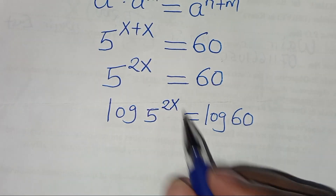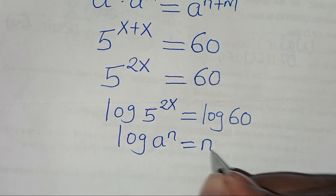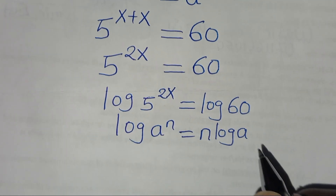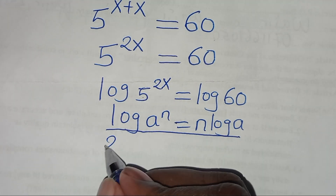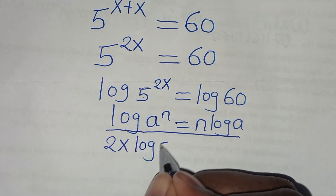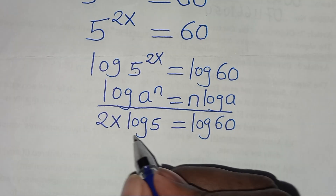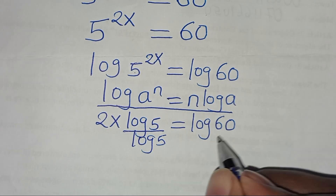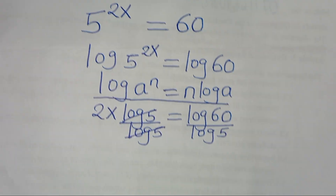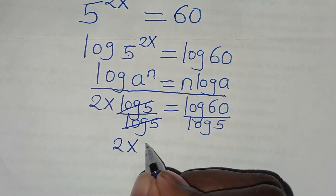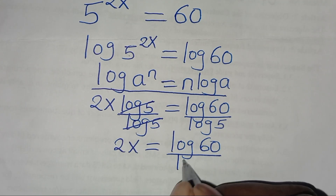This implies that log 5 to the power of 2x is in the form of log a to the power n, which is equal to n log a. Applying this power property of logarithm, then log 5 to the power 2x becomes 2x log 5. Now let's divide both sides by log 5, and simplify, so that now we have 2x is equal to log 60 divided by log 5.